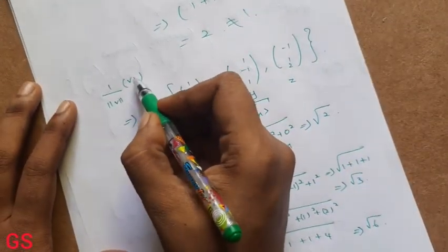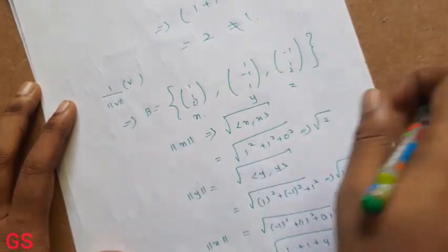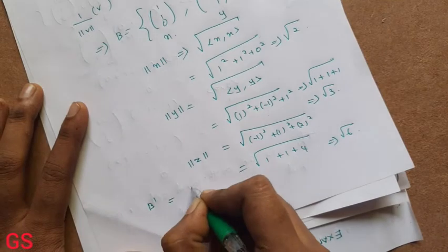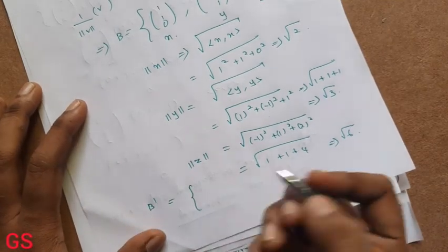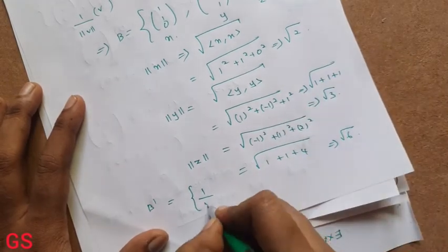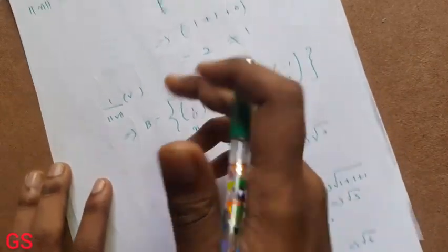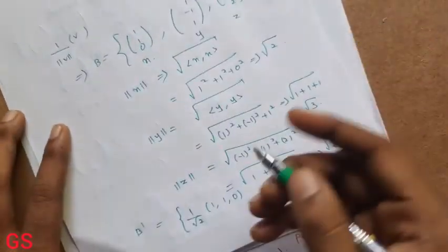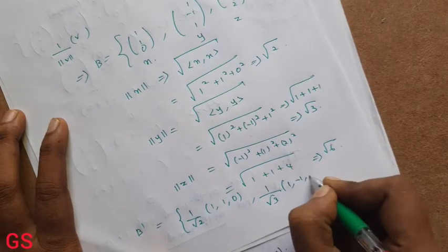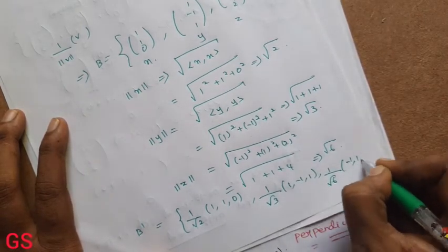So how do you do that? B prime is equal to: 1 by root 2 times (1, 1, 0), 1 by root 3 times (1, -1, 1), and 1 by root 6 times (-1, 1, 2). So B' is the ortho-normal set. B dash is orthonormal.